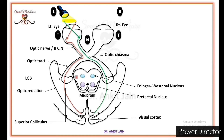Now a very important point: at the level of the midbrain, some visual information from the optic tract reaches directly to the pre-tectal nucleus. From the left optic tract, some visual information reaches the left pre-tectal nucleus. Similarly, from the right optic tract, some visual information reaches the right pre-tectal nucleus.